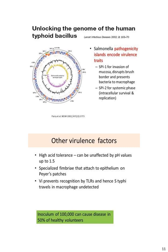The virulence factors include SPI-1 antigen for invasion of the mucosa and SPI-2 for the systemic phase, that is intracellular survival and replication. Other virulence factors include high acid tolerance, specialized fimbriae, and Vi antigen.